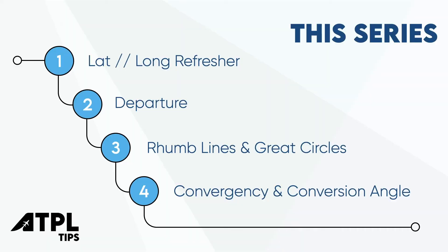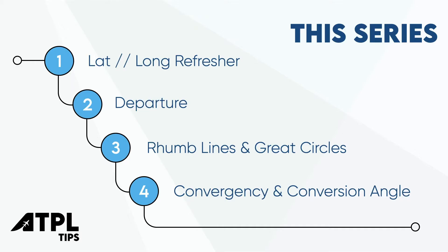Video one was a real brief introduction — or hopefully not an introduction, more of a refresher — about latitude and longitude and how to use the DMS button on your calculator. Video two was the departure formula, explaining why we use cosine within that formula, and just taking the component parts of that formula and looking at it. This video three is rhumb lines and great circles. We'll take a brief look at those in order to be able to get into video four, to look at convergency and conversion angle, and answer some exam questions about those. Okay, let's go.